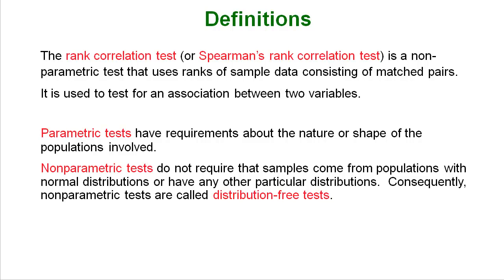Parametric tests have some sort of requirement about the nature or shape of their distributions, the populations that the data comes from. Normally those requirements are that you're sampling from a population that is normally distributed or you take a large enough sample to kind of overcompensate for it not being perfectly normal or close to normal.